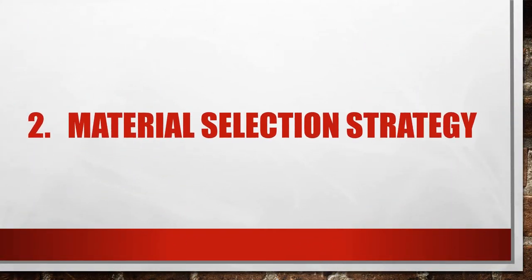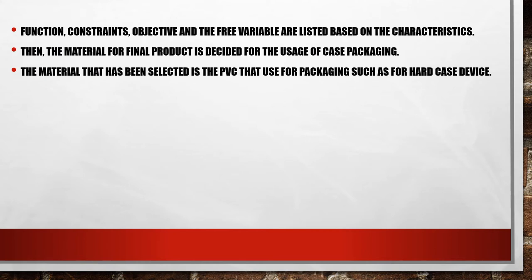Number two: Material selection strategy. The design requirement method for plastic case packaging is decided. In this method, the requirements such as function, constraints, objective, and the free variable are listed based on the characteristics. Then, the material for final product is decided for the usage of case packaging.